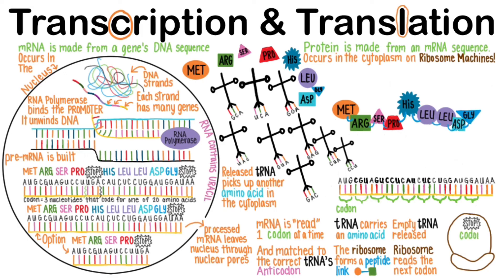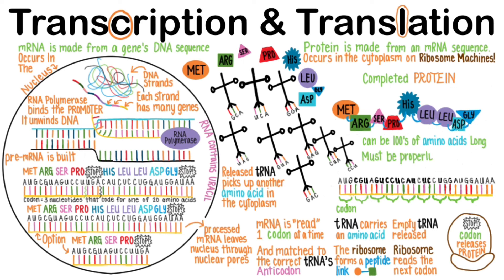So the stop codon releases the protein from the ribosome. The completed protein can be hundreds of amino acids long, and it must be folded properly in order to carry out its function. Now spend a few minutes reviewing this information, make sure you understand it reasonably well, and then use my Quizlet flashcards to practice and review. See you in the next video!